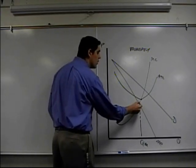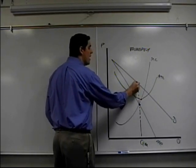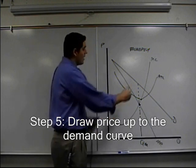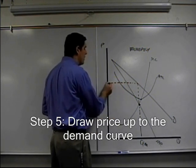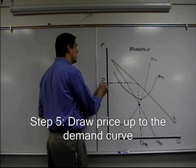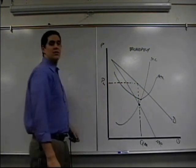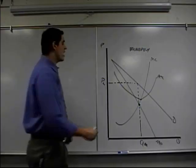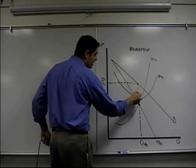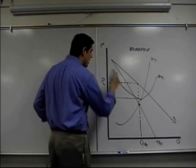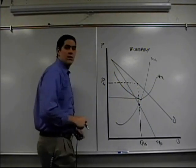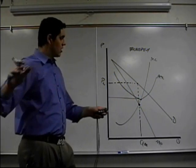What they're going to charge is what people are willing to pay. The demand curve tells us how much they're willing to pay, and the monopoly is going to charge that price. And if I want to figure out the profit: price down to ATC and over — it's right there. That's the concept. See you next time.